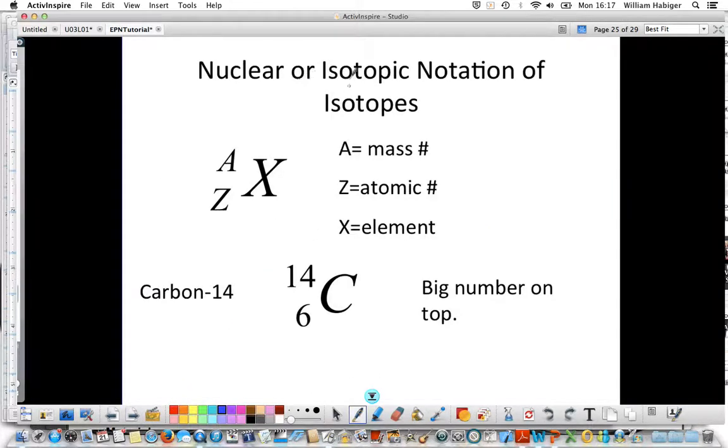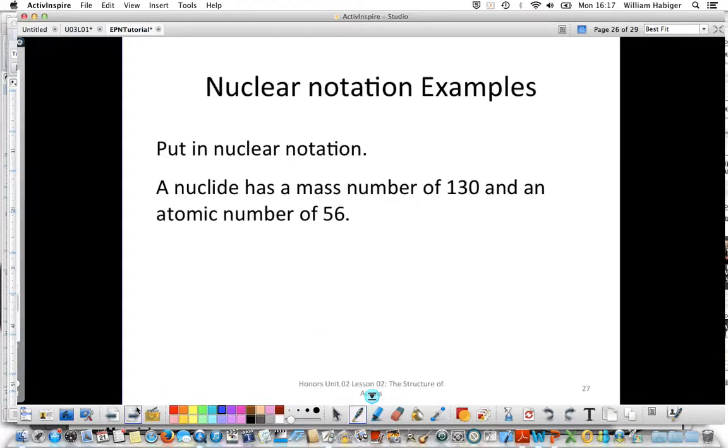Another type of notation is called nuclear or isotopic notation. This is where we use the symbol. And then we have the mass number as a superscript on the left side and the atomic number as a subscript on the left side. Remember one easy way to remember is that the big number always goes on top.